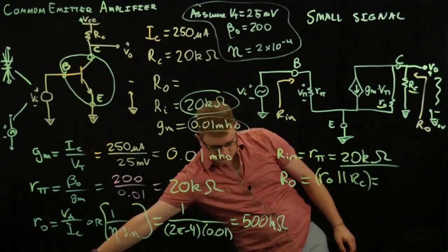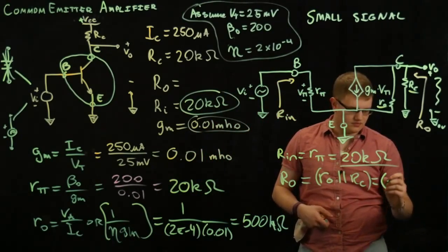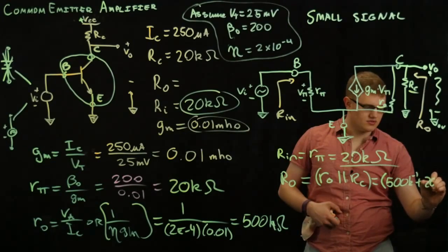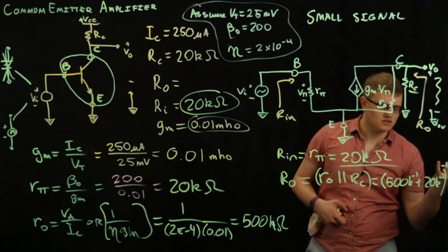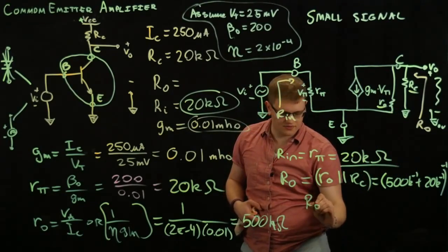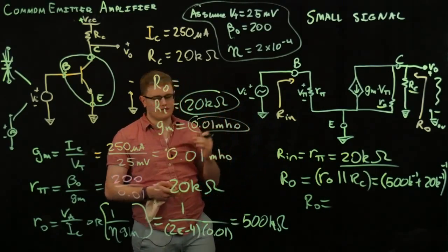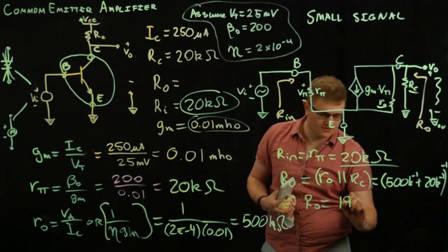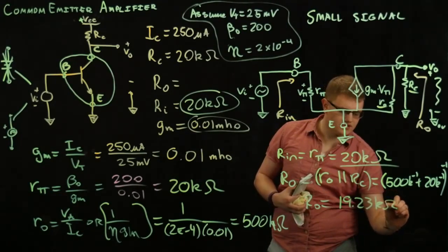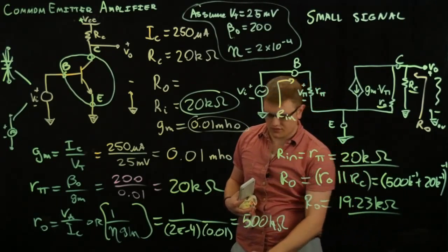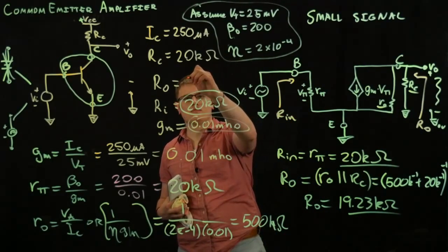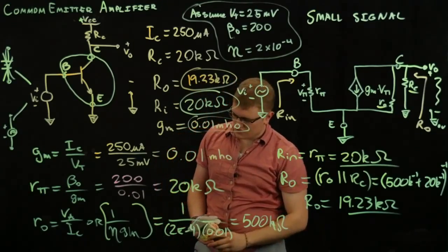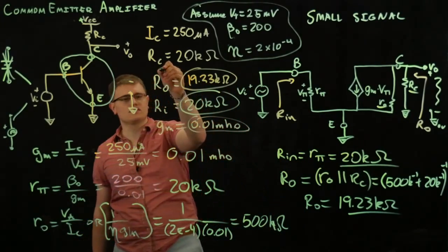RO, RC. It's going to be equal to 500K, negative 1 plus 20K, negative 1, negative 1. That's just a shorter way of doing parallel resistors. And what you get for that, you're going to get about 19.23 kiloohms. And so, we have this. Write that down over here. 19.23 kiloohms. And so, we found all three of our values that we wanted at the beginning.